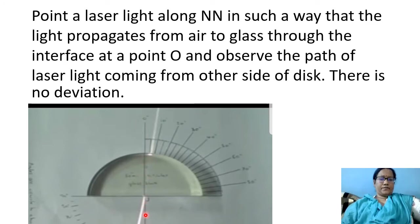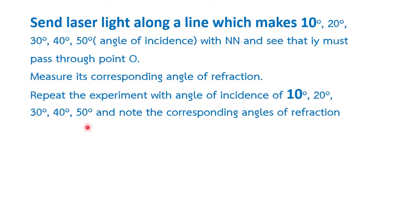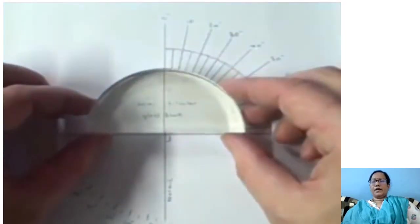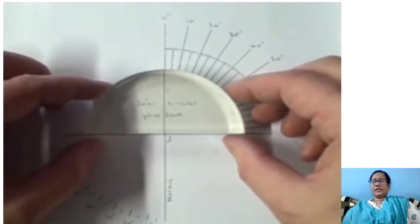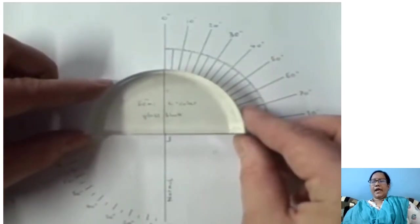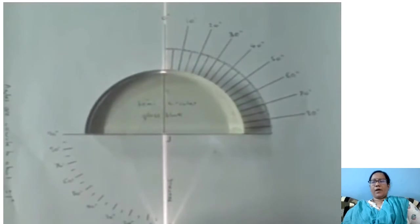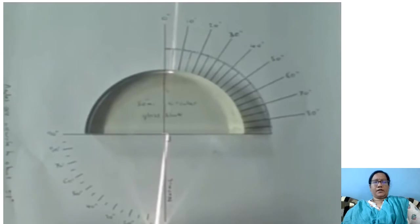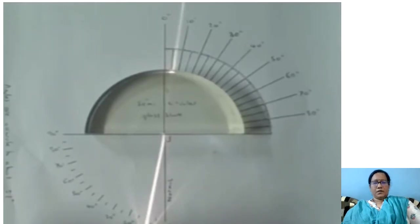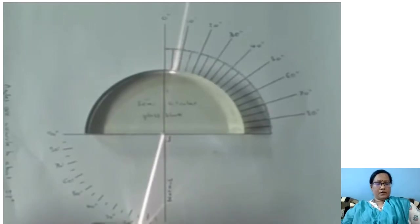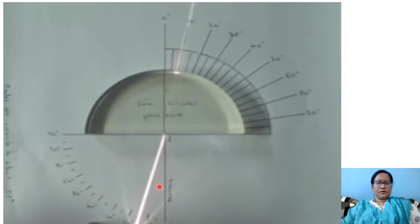There is no deviation when the laser light is directed along NN through the interface at point O. There is no deviation.